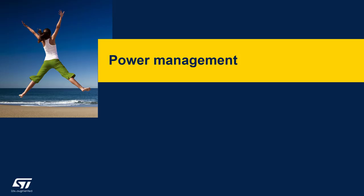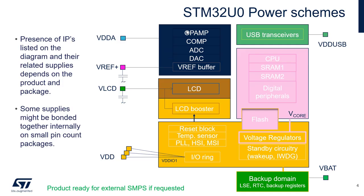Now let's look at the power — the different power domains and the different voltage levels needed for these domains. Let's start with the analog domain, powered by VDDA and VREF+. VREF+ is available on bigger packages to give a voltage reference for your DAC and ADC. Otherwise you can use the internal voltage reference — VREF buffer — and your VDDA powers the analog block for all analog peripherals like op amp, comparator, ADC, DAC, and the internal voltage reference.